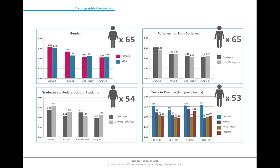Graduates versus undergraduates: this graph shows undergraduates preferred the more unconventional building designs over the rectilinear building that graduate students preferred. This could be due to the excitability of undergraduates responding to novel designs that differ from the norm. Years in practice: years in practice did not affect higher preference for the curved building, although those with six to nine years in the architectural design field preferred the curved, mixed, and angled buildings over the rectilinear one.